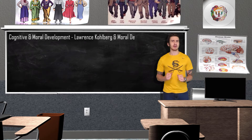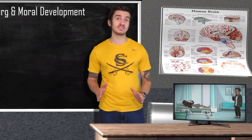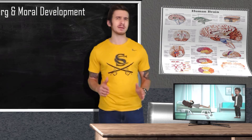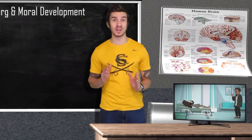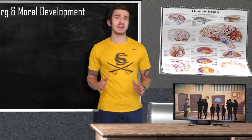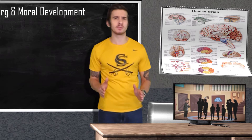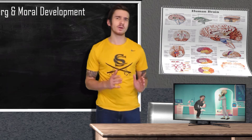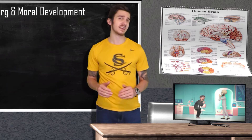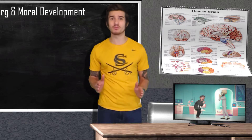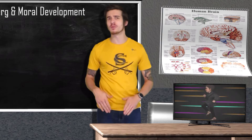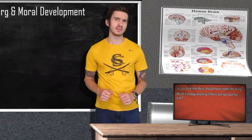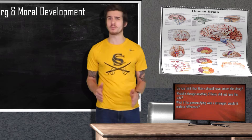Up next we talk about moral development. Kohlberg presented the Heinz dilemma: Heinz's wife was dying from cancer, and a local chemist discovered a drug that might save her but charged an absurd price Heinz couldn't afford. After trying everywhere for money, Heinz could only get half the cost. The chemist refused his offer to pay in installments, so Heinz broke into the lab and stole the drug. Questions were posed: Should Heinz have stolen the drug? Would it matter if he didn't love his wife, or if the person dying was a stranger?